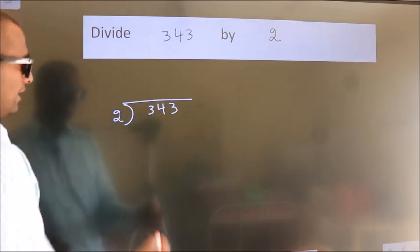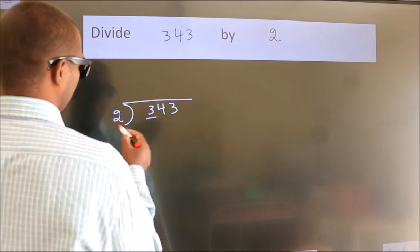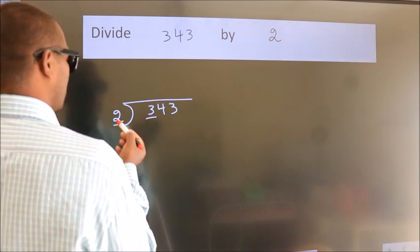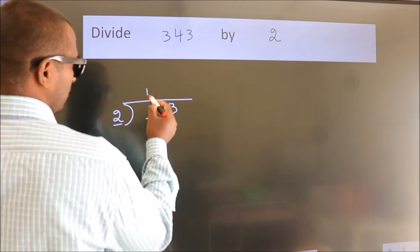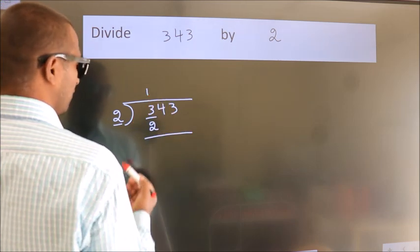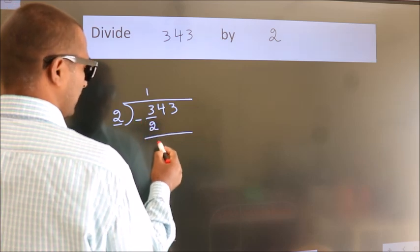Next. Here we have 3, here 2. A number close to 3 in the 2 table is 2 times 1, which is 2. Now we should subtract. We get 1.